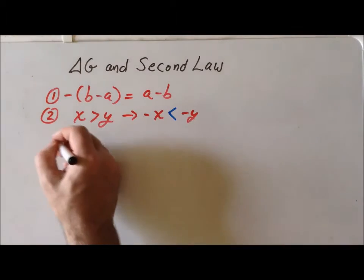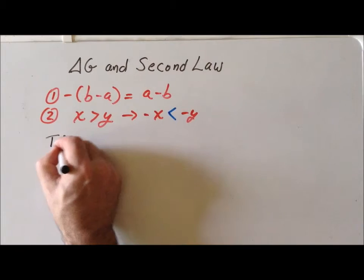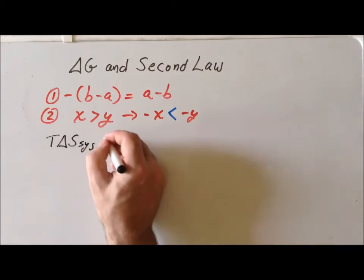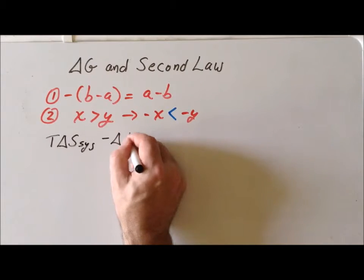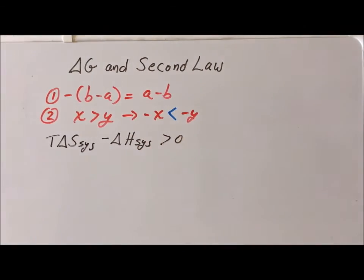So that is how we end up with the result of getting T delta S of the system minus delta H of the system being greater than zero. What do we want to do next? For our next step, we simply want to go through and divide by T.